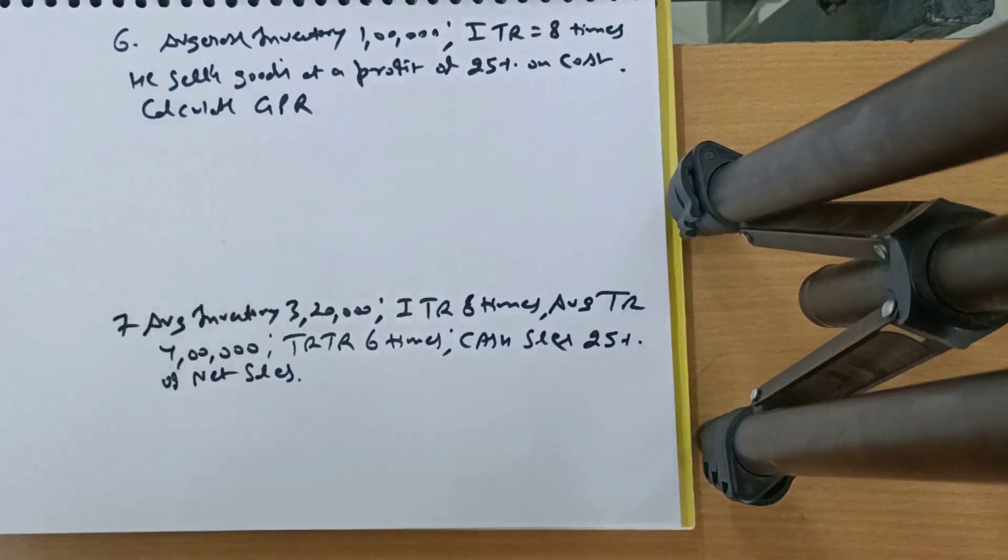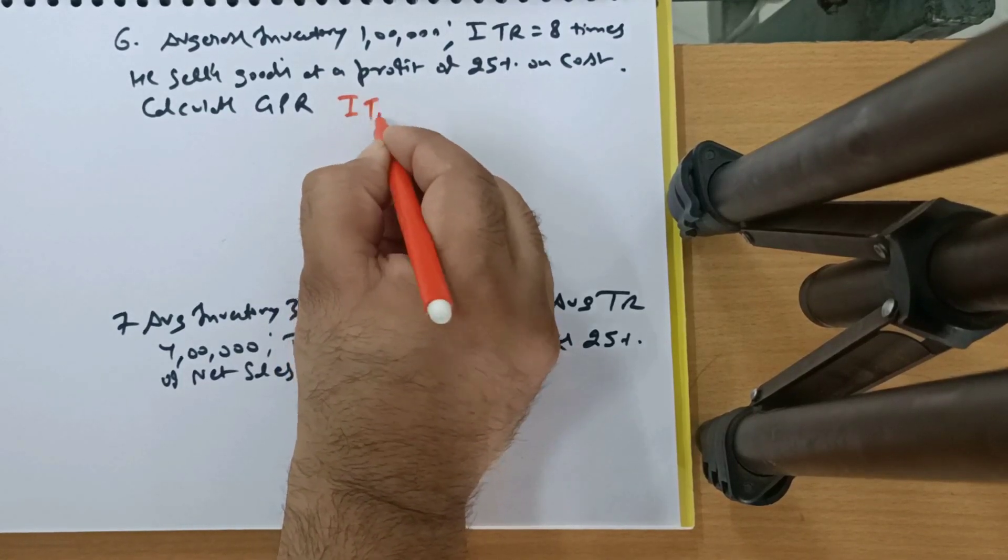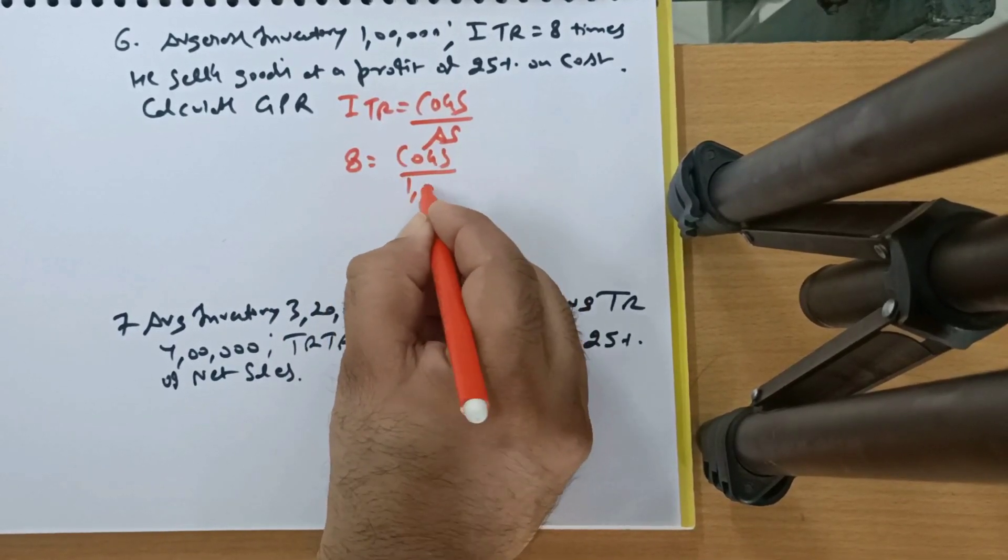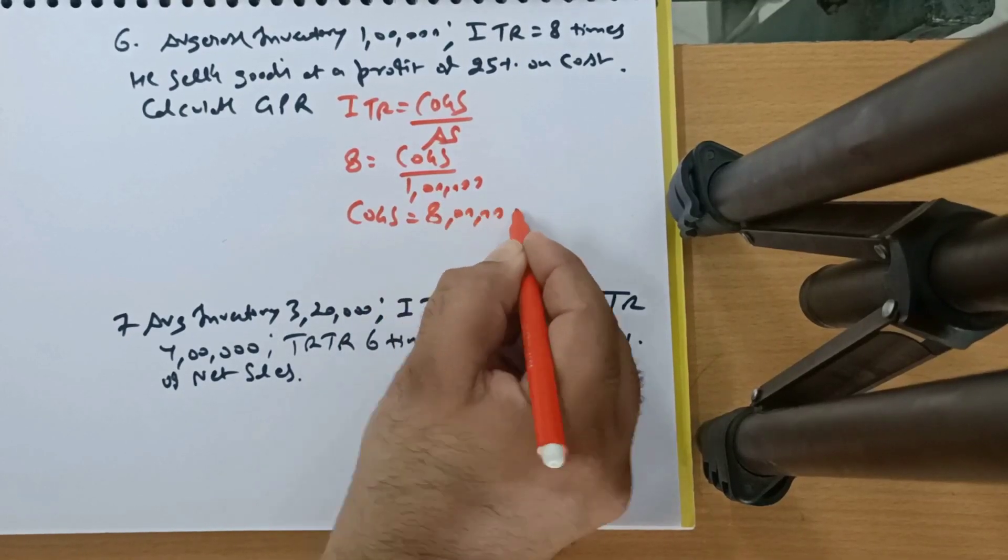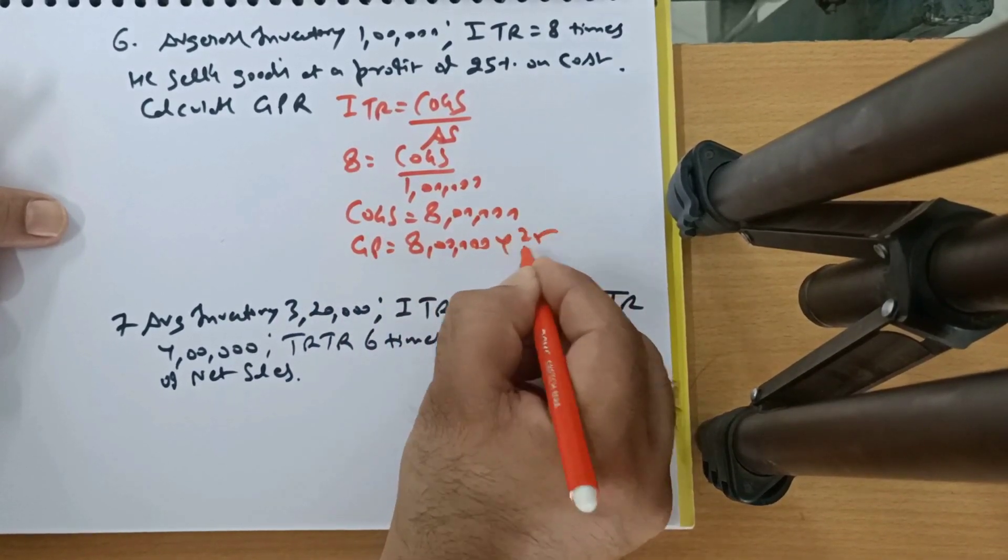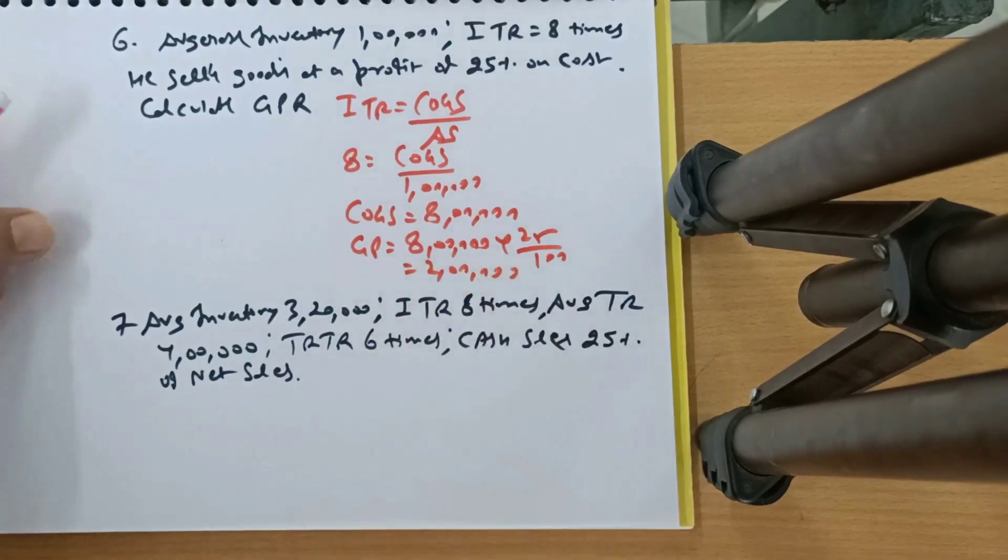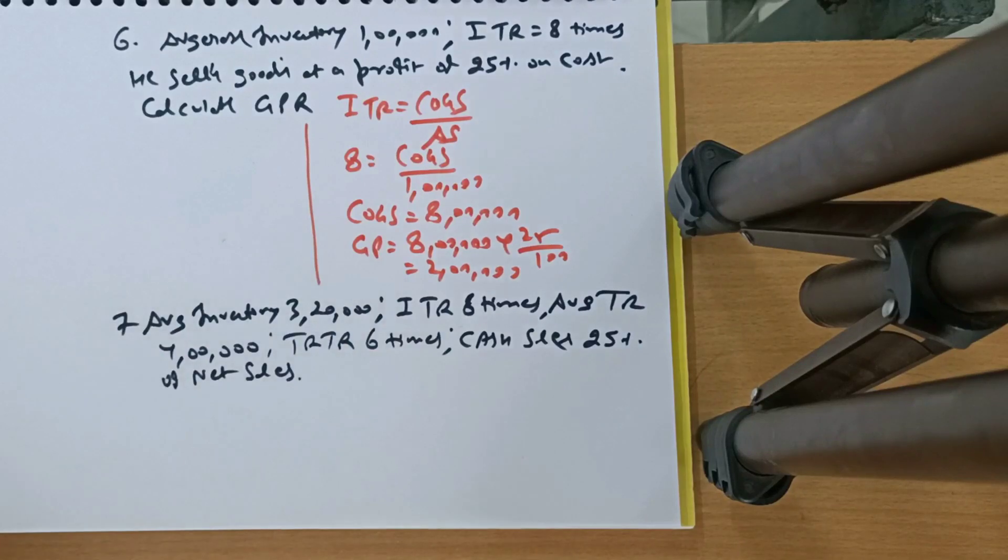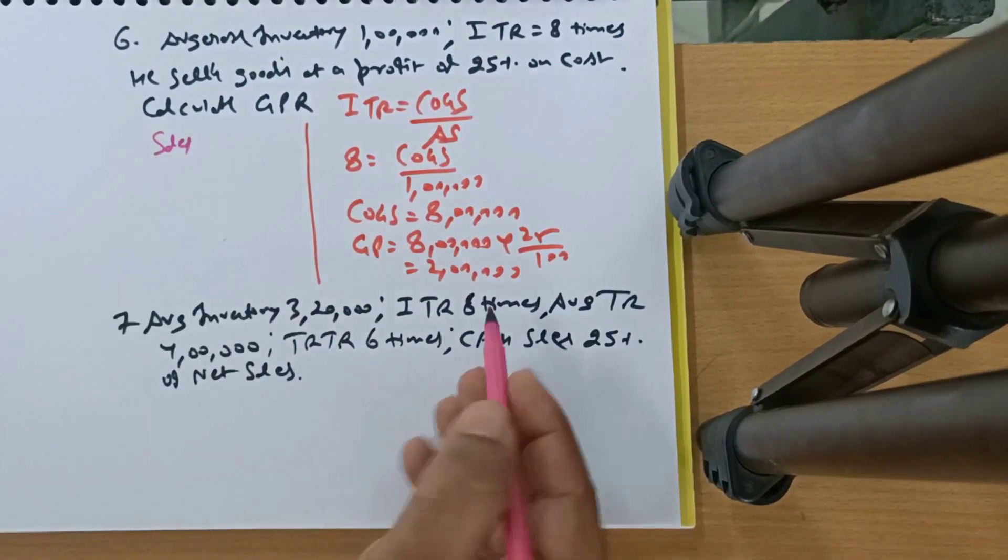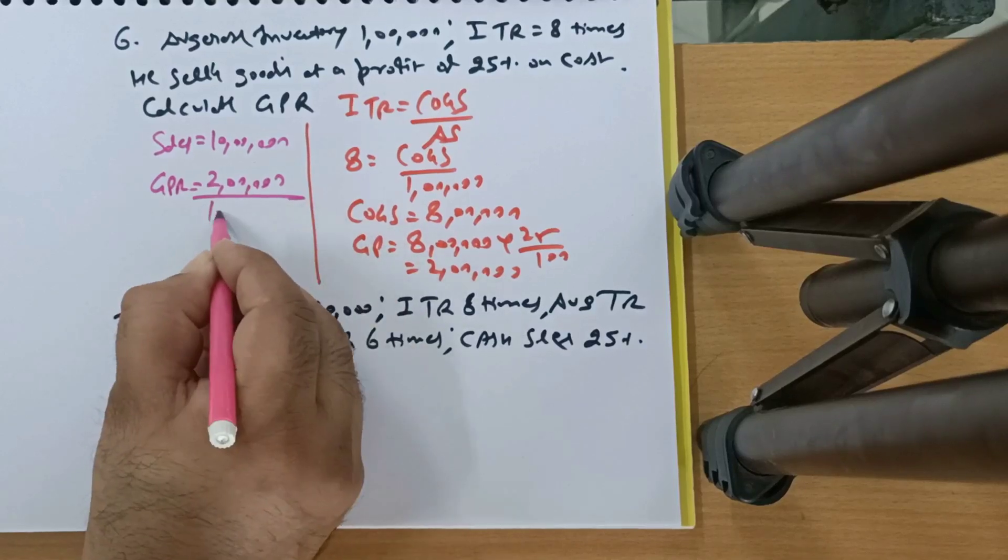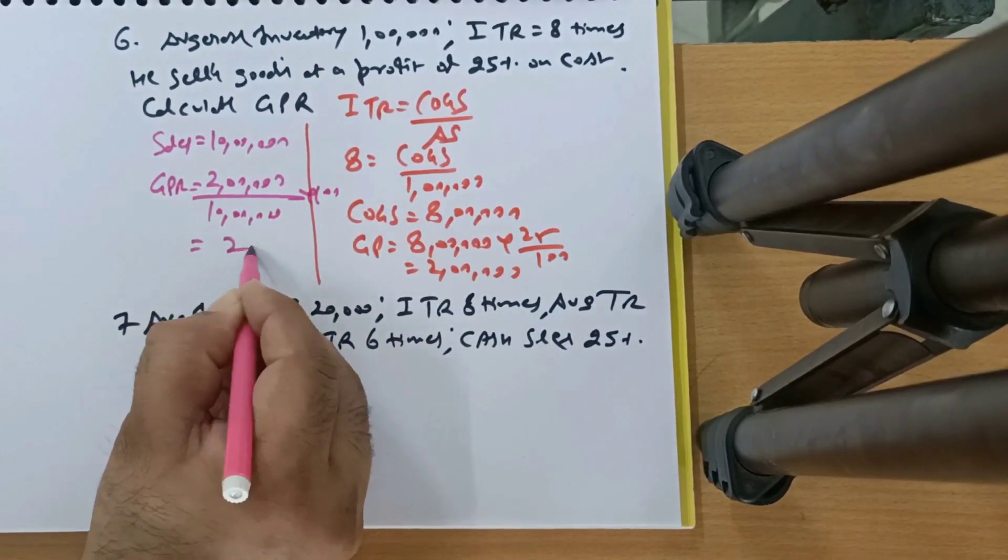I told you first, the video will be fast because you already have to take a quick review. Next question, average stock given, ITR given and some information. So first of all, use this formula, inventory turnover ratio. Formula is COGS upon average stock. How many? 8. COGS, I don't know. Average stock? 1 lakh. So COGS? 8 lakhs. Now GP said that 25% on cost, so the cost is going to cost. So 25 by 100, and this is 2 lakh. Now GPR's formula, GP upon net sales into 100, answer is 20%.